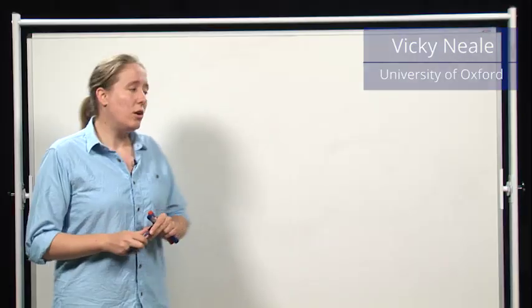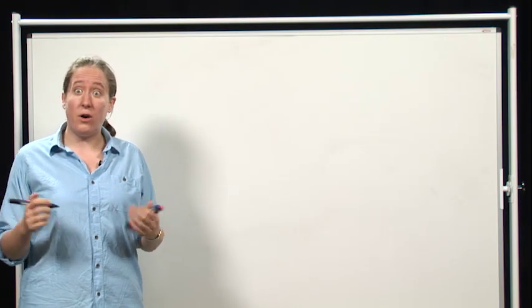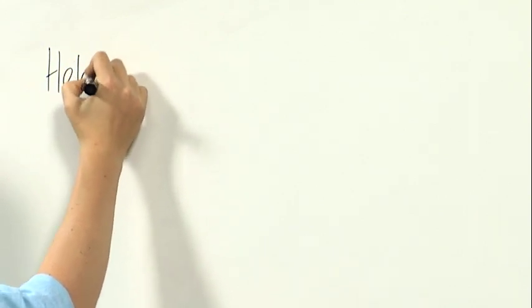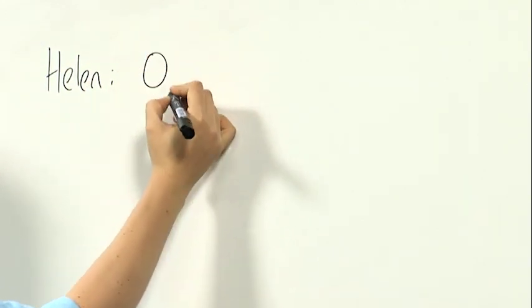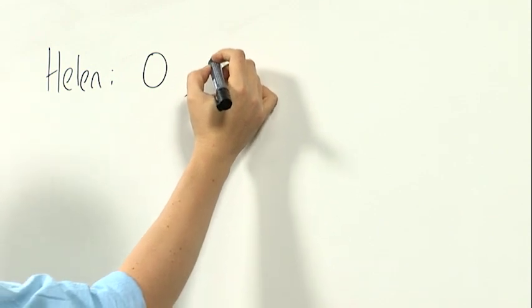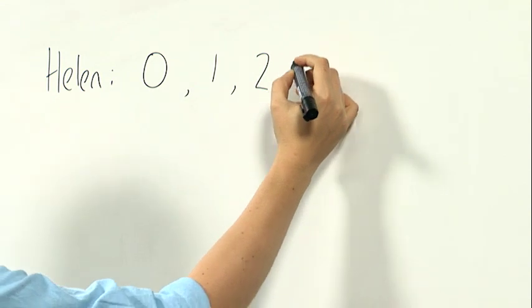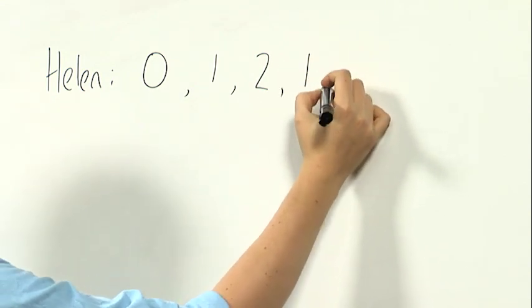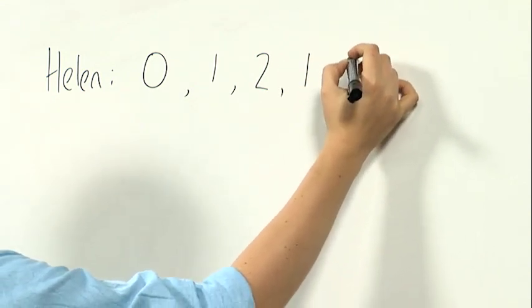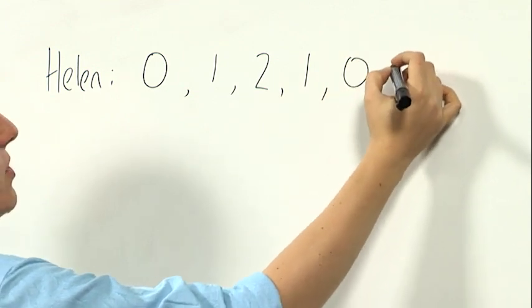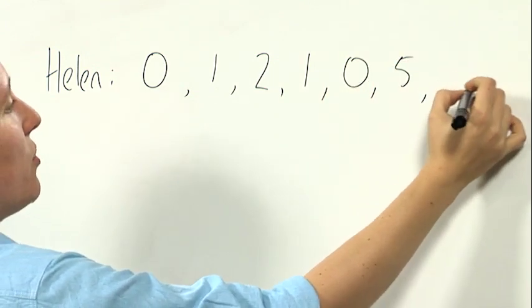I want to get a feel for the problem, so I'll work out the start of the two lists for Helen and for Phil. So Helen's dividing 365, and she divides by 1 with remainder 0, and by 2 with remainder 1, and by 3 with remainder 2, and by 4 with remainder 1. 5 gives remainder 0, 6 gives remainder 5, and so on.